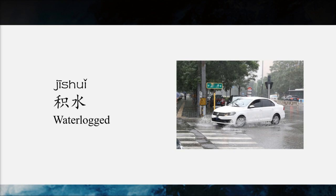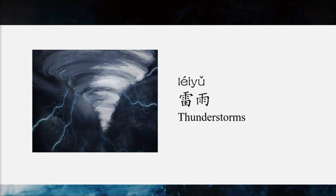Does it rain a lot in the summer in Beijing? Yes. 北京是个很干燥的北方城市，春天、秋天和冬天都很干燥，只有夏天常常下雨. So Beijing is a very dry northern city — it's dry in the spring, fall, and winter, but it rains often in the summer. We have a lot of rain and thunderstorms in July and August. 七月和八月，我们经常下雨，特别是雷阵雨. Thunderstorms — 雷雨. But it is usually not as bad as it was this time. 但通常不会像这次这么严重.